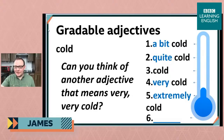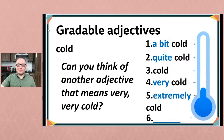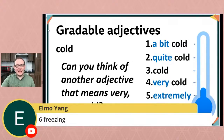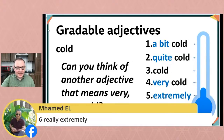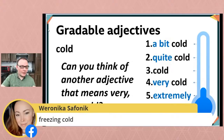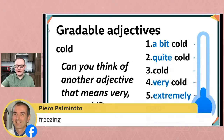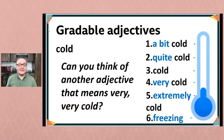Let's move some things off the screen that we don't need, and let's have a look at your answers. So what is the missing word in number 6? Lots of you are getting the right answer. Elmo says freezing, Charlotte says freezing, and Piero says freezing as well. Very good — well done! So freezing is the correct answer here.